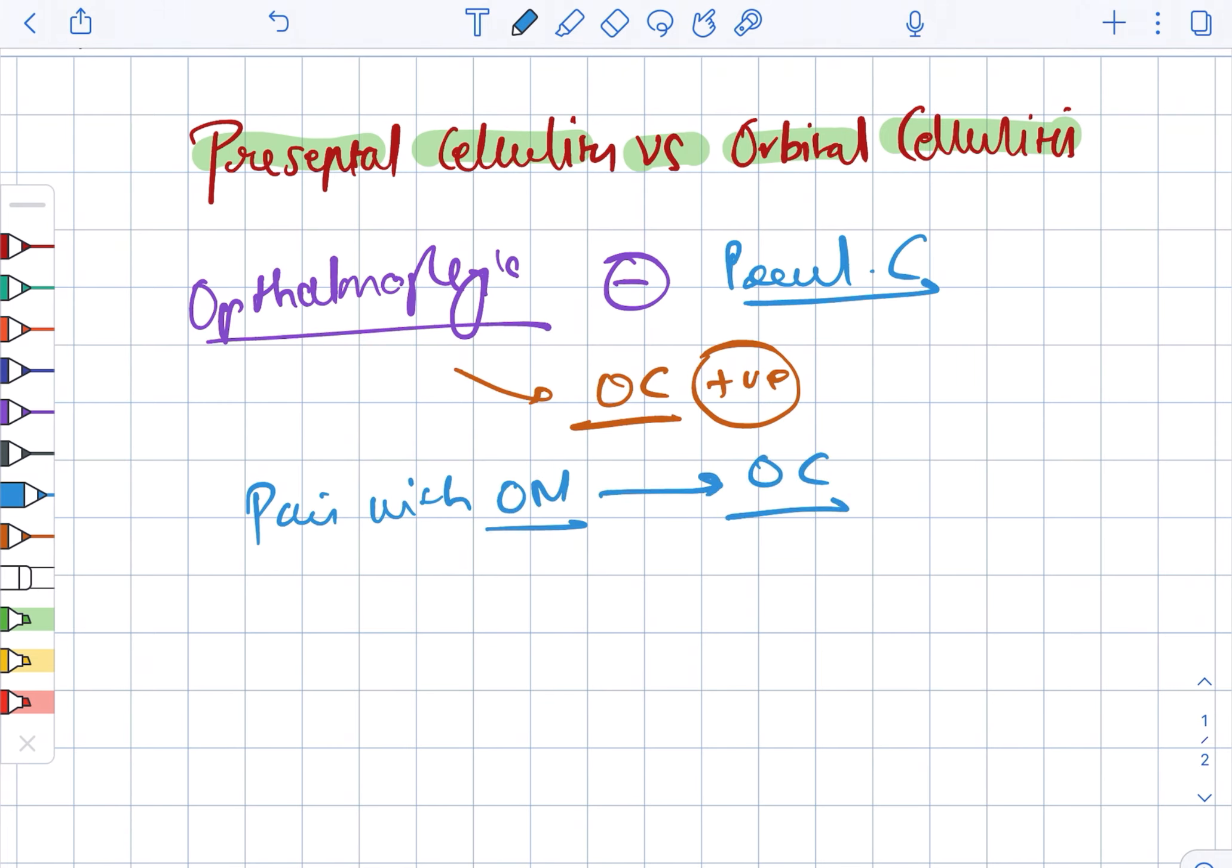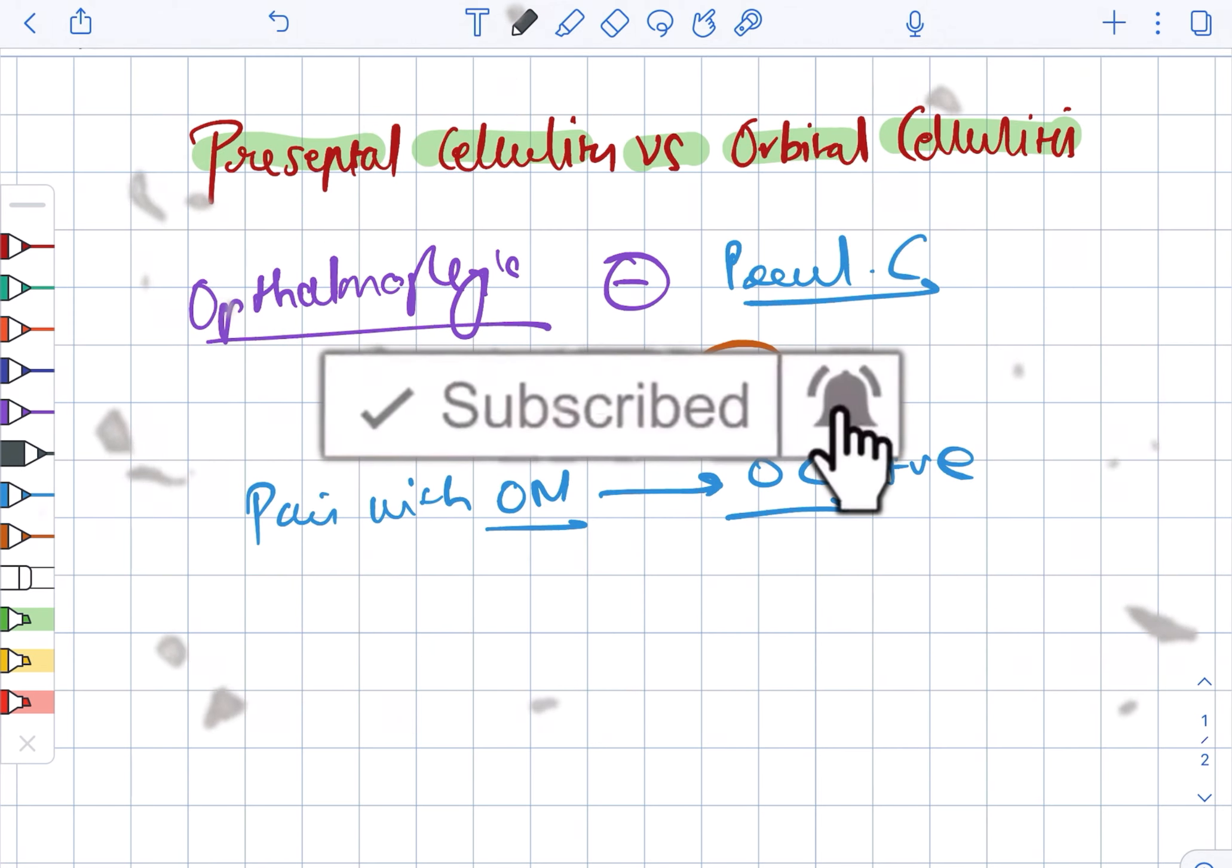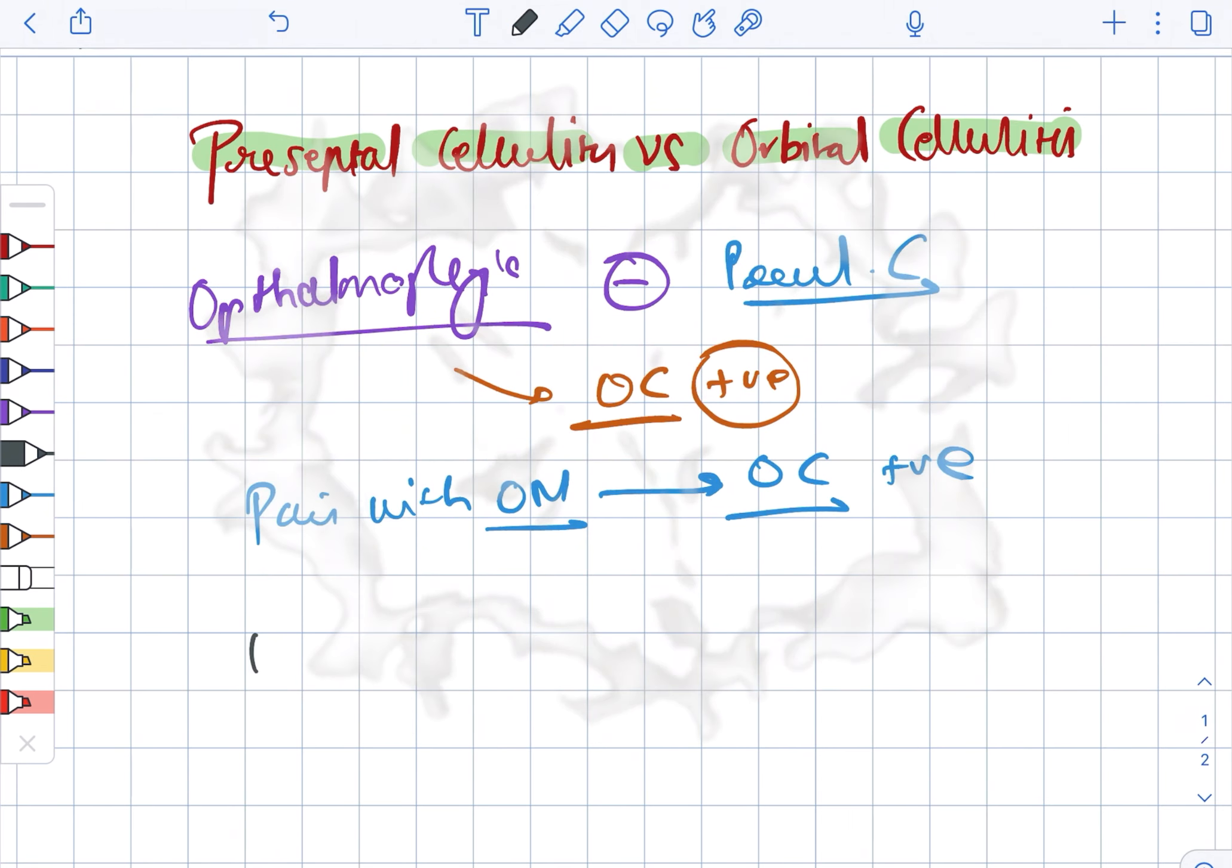Pain with ocular movements in orbital cellulitis is positive, whereas proptosis in orbital cellulitis can be positive or negative.